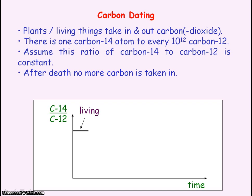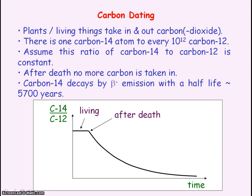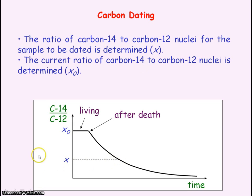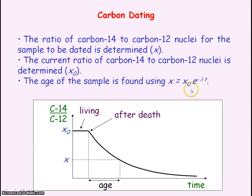When living things die, no more carbon is taken in and the carbon-14 decays by beta minus emission. The ratio of carbon-14 to carbon-12 nuclei for the sample is determined and we give that symbol x, and the current ratio of carbon-14 to carbon-12 nuclei is determined and that's our x₀. We can then use the exponential decay equation to determine the age of the sample.